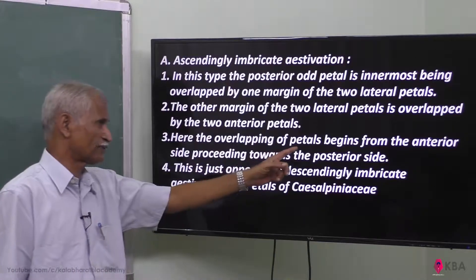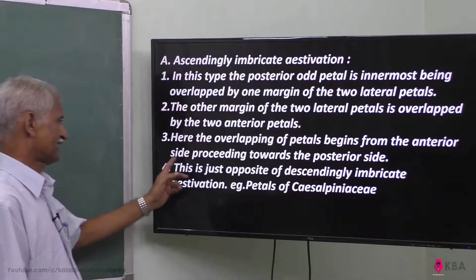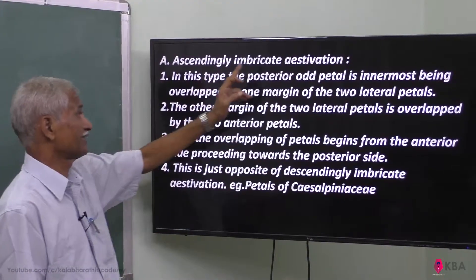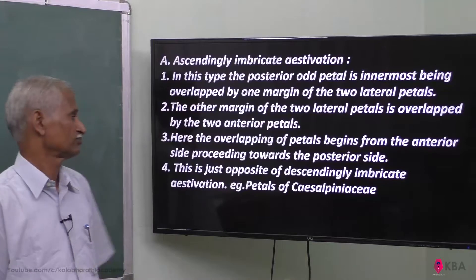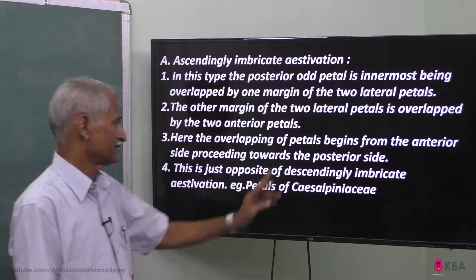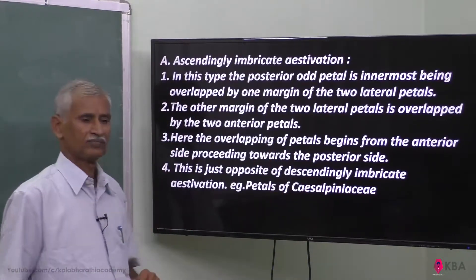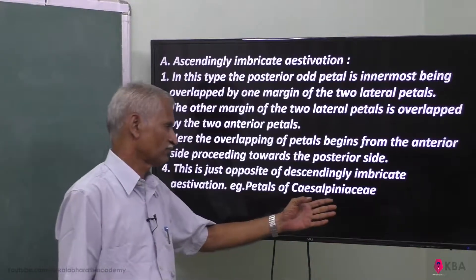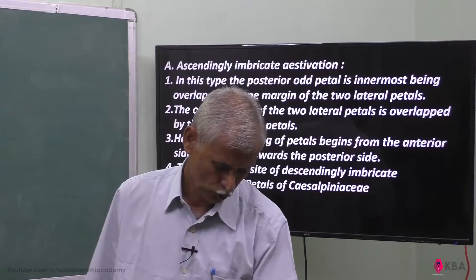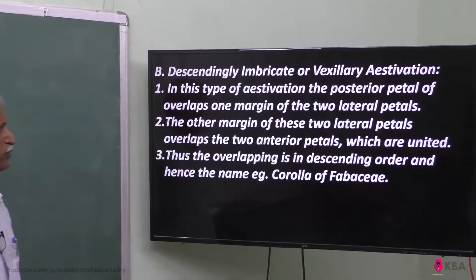Here, the overlap of the petals begins from the anterior side and proceeds towards the posterior side. So this is called ascending Imbricate aestivation. The opposite is descending Imbricate aestivation. Example: petals of the Caesalpiniaceae family.